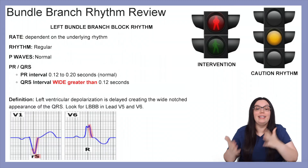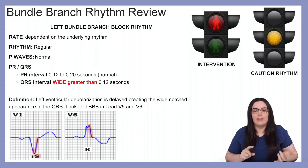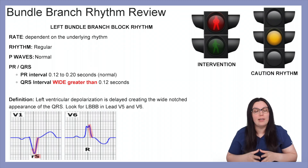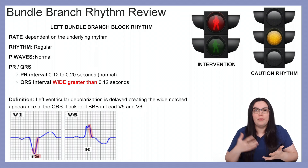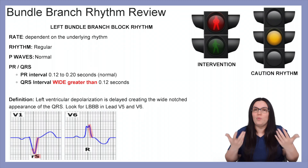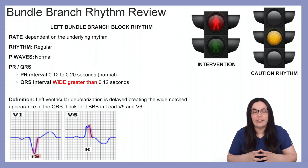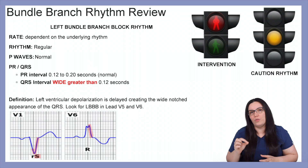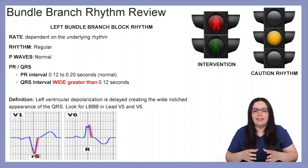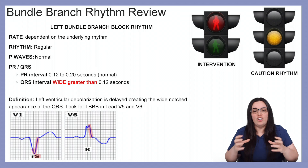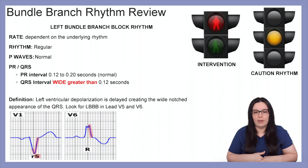Next let's take a look at left bundle branch blocks. Again, the rate, the rhythm, and the p waves are all going to be normal depending on what the underlying rhythm is. The PR interval should also be normal, and the QRS is going to be wide, ugly, and gross — greater than 0.12 seconds, which is considered normal. The definition for left bundle branch blocks is left ventricular depolarization that is delayed, creating a wide notched appearance of the QRS.